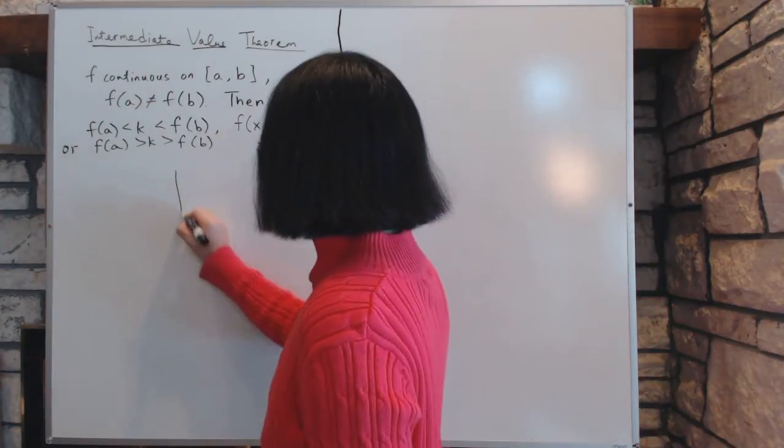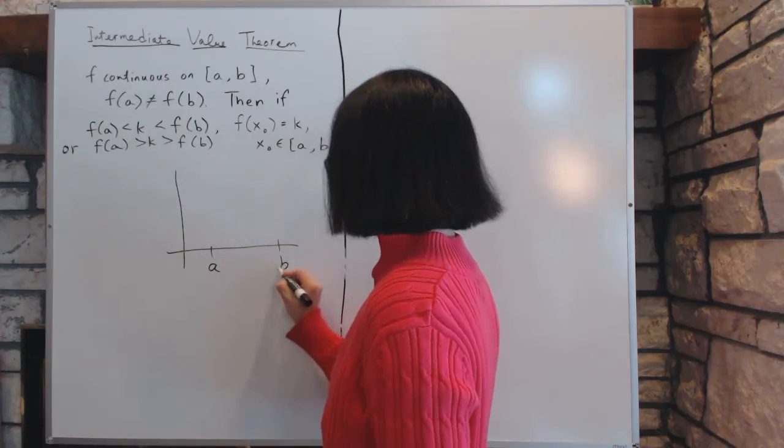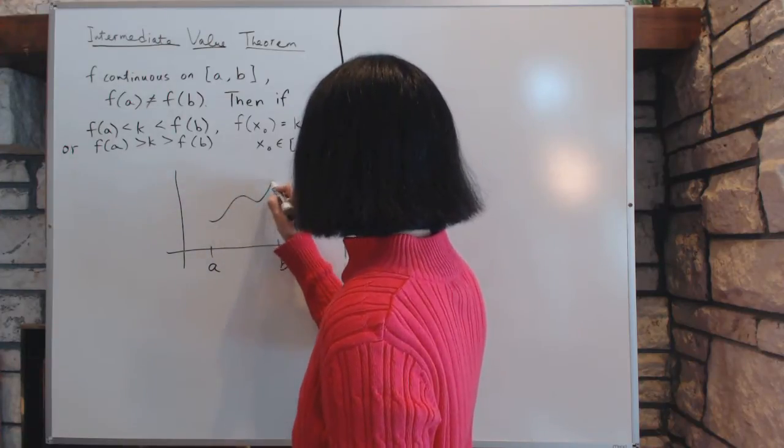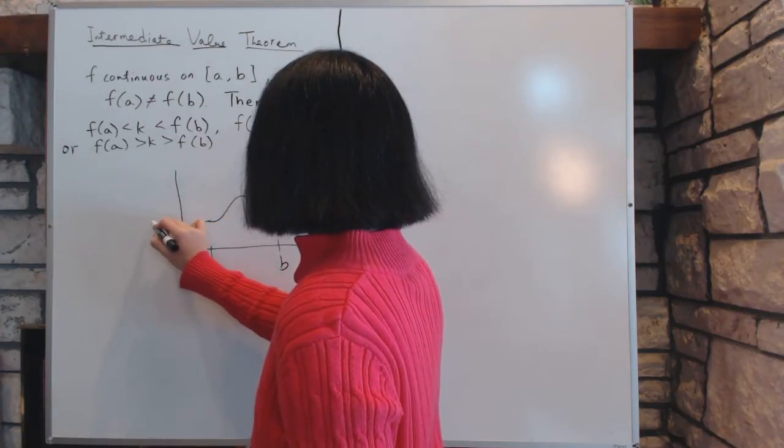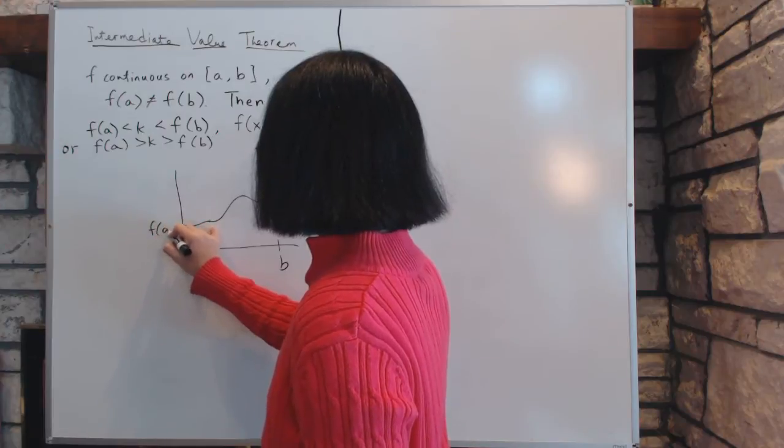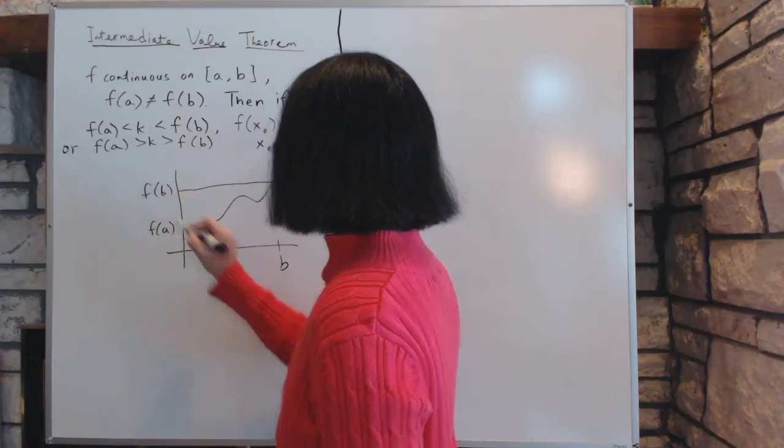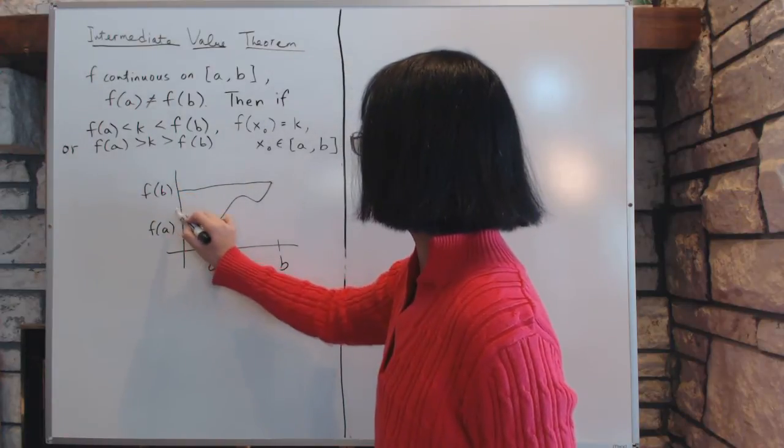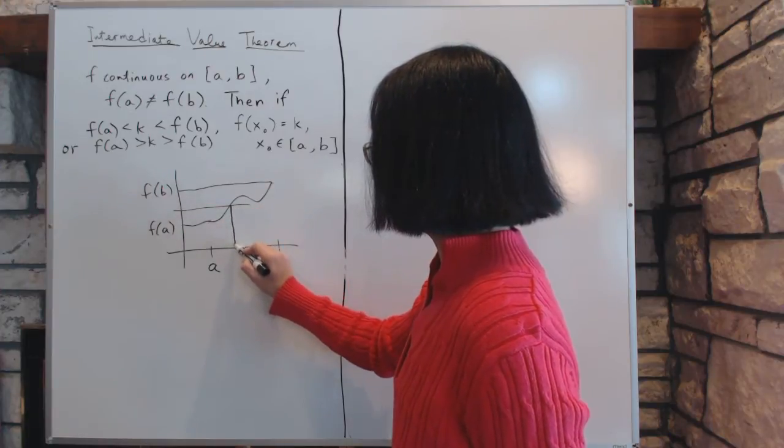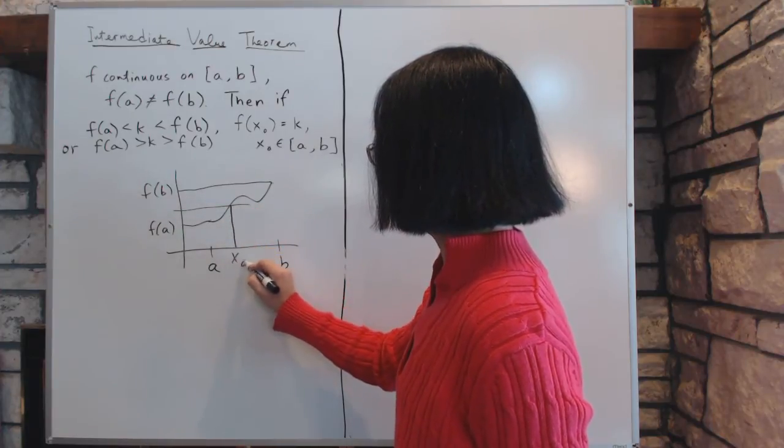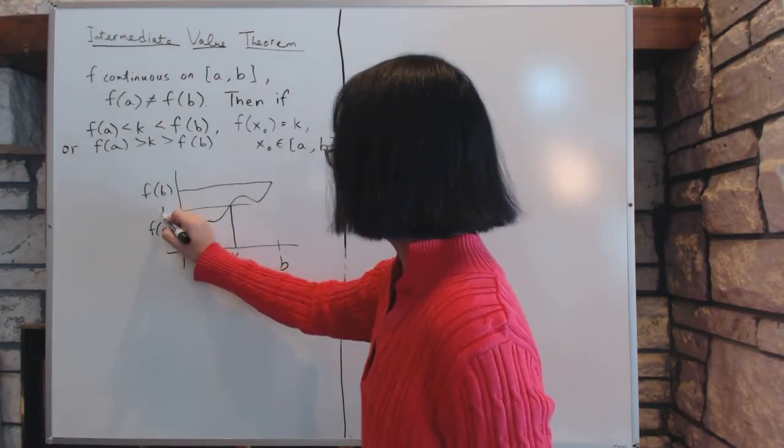Now, graphically, you can see this as, say, if you have an interval from a to b, and then your graph goes somewhere. Say, this is f(a) here, and this is f(b). Then you can cut across any value k between f(a) and b, and you will be able to find an x0 where f of x0 is going to be equal to k.